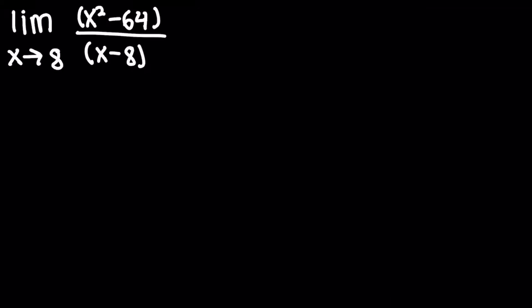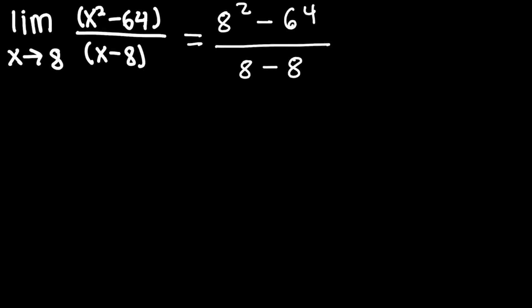Let's try another example — pause the video if you want to solve it yourself. The limit as x approaches 8 of x squared minus 64 over x minus 8. We plug in 8: 8 squared minus 64 over 8 minus 8. 8 squared is 64, and 64 minus 64 is 0. And 8 minus 8 is 0. So it's indeterminate.